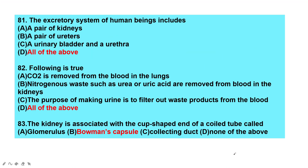The excretory system of human beings includes a pair of kidneys, a pair of ureters, the urinary bladder, and the urethra — all of the above are parts of the excretory system. Carbon dioxide is removed from the blood in the lungs. Nitrogenous waste such as urea or uric acid is removed from the blood in the kidneys.